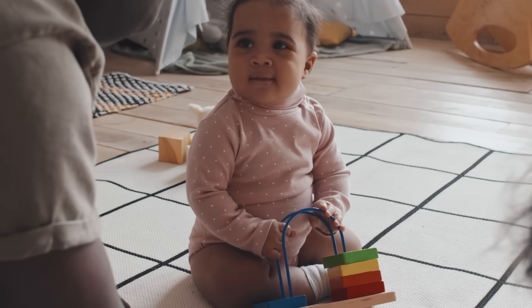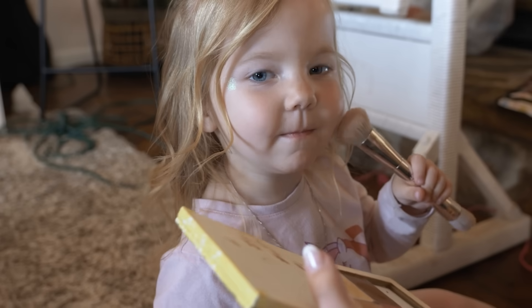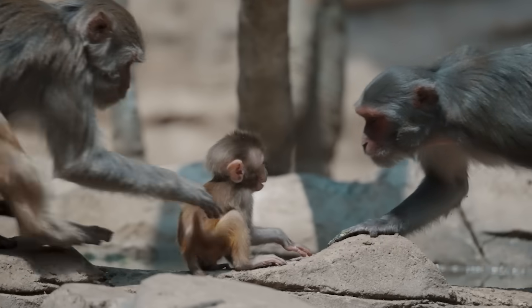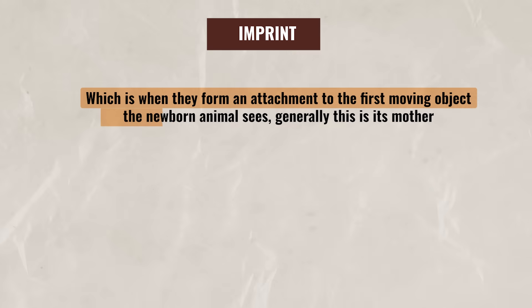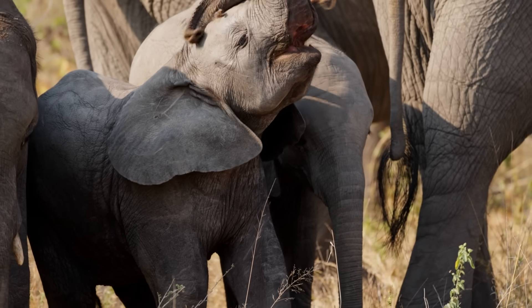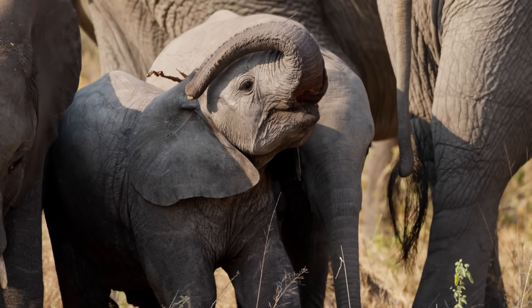Speaking of early development, we can see that there are critical and sensitive periods when the brain is especially receptive to acquiring certain skills. These periods are critical for developing skills such as language, and it isn't just humans that have these periods — some animals do as well. For instance, certain animals have a critical period where they imprint, which is when they form an attachment to the first moving object that the newborn animal sees, generally its mother. A critical period is a specific window of time when a particular skill or behavior must be acquired. If the necessary experiences or stimuli are missing during this time, the development of that skill may be significantly hindered or impossible to achieve later on.